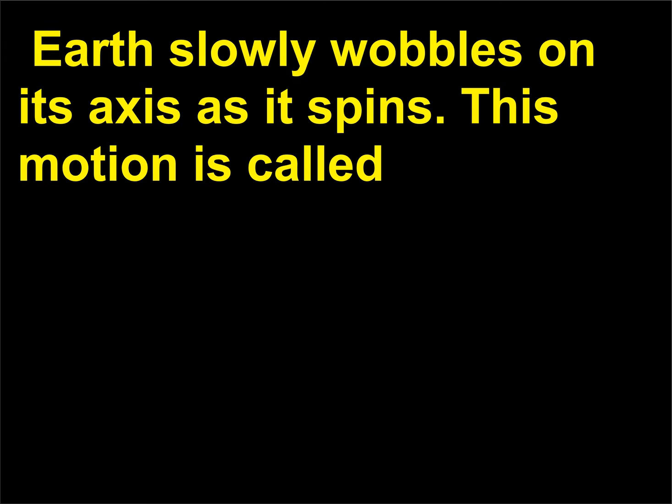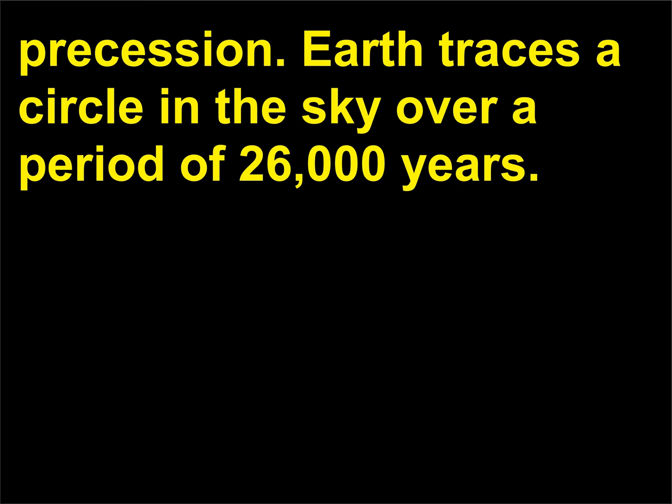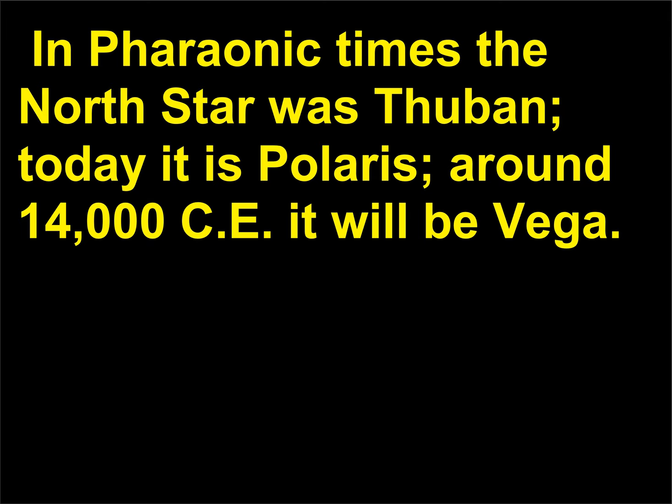Earth has had several north stars. Earth slowly wobbles on its axis as it spins — this motion is called precession. Earth traces a circle in the sky over a period of 26,000 years. In pharaonic times the north star was Thuban, today it is Polaris, and around 14,000 CE it will be Vega.